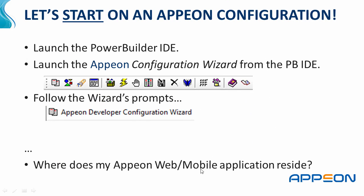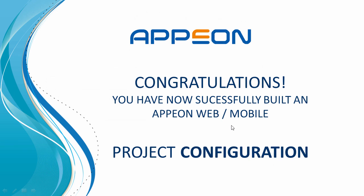So we're done at this point. We've actually gone all the way through creating a configuration, building a web application, and then we tested it. In the mobile world, it's exactly the same, but what I need in order to do that is to actually show you a mobile device — a screen capture of that — and show you how that works from that side. We're going to do that in another tutorial. So at this point, congratulations. You've successfully built an Appeon web and/or mobile project configuration and you've tested it. Everything looks good as far as transposing an existing PowerBuilder application to your first web or mobile application using Appeon web and Appeon mobile through the Appeon server. Thanks for watching.